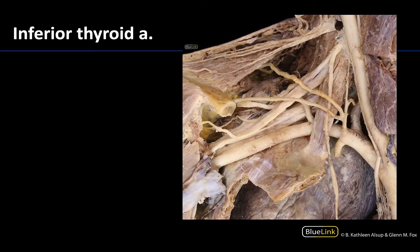If you have a superior thyroid artery, that's a good indication there will be another type — the inferior thyroid artery. This is actually a branch from the thyrocervical trunk of the subclavian artery. This large artery here is the subclavian, which will eventually continue and change its name to the axillary artery we saw previously. Right here you have the thyrocervical trunk, and from it the inferior thyroid artery dives underneath the common carotid to reach the thyroid gland.